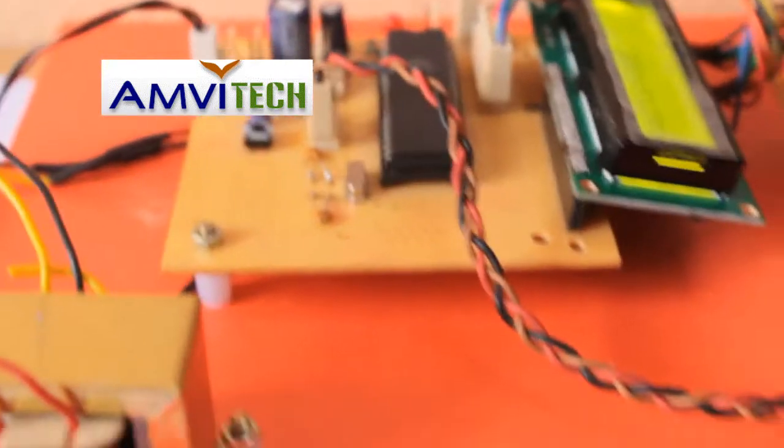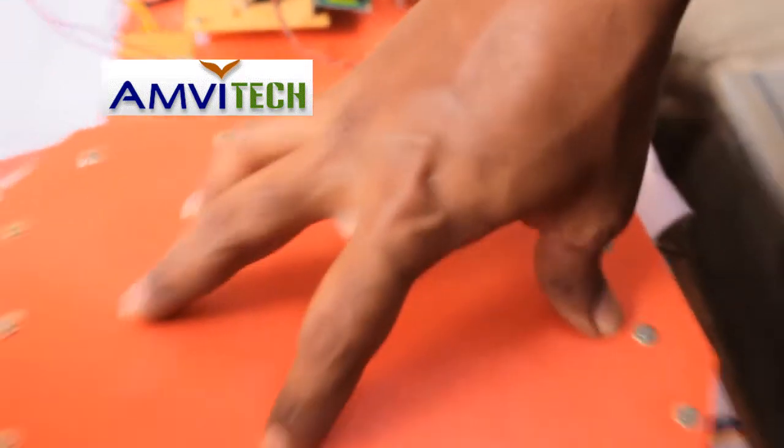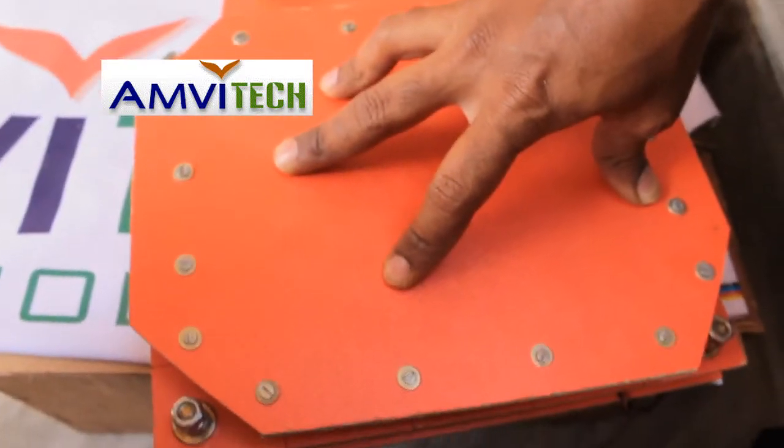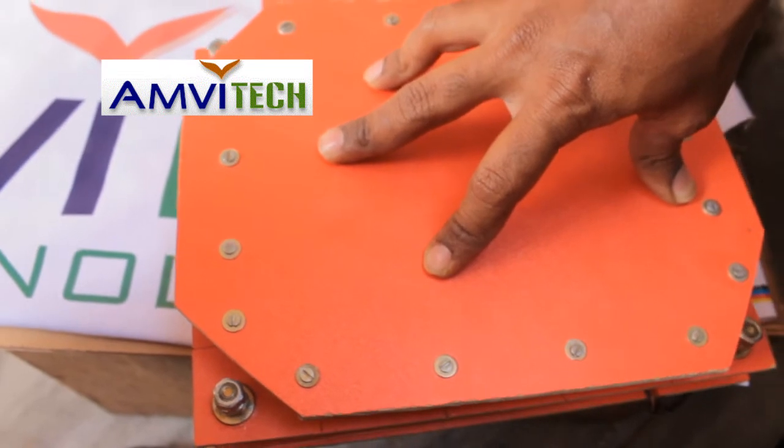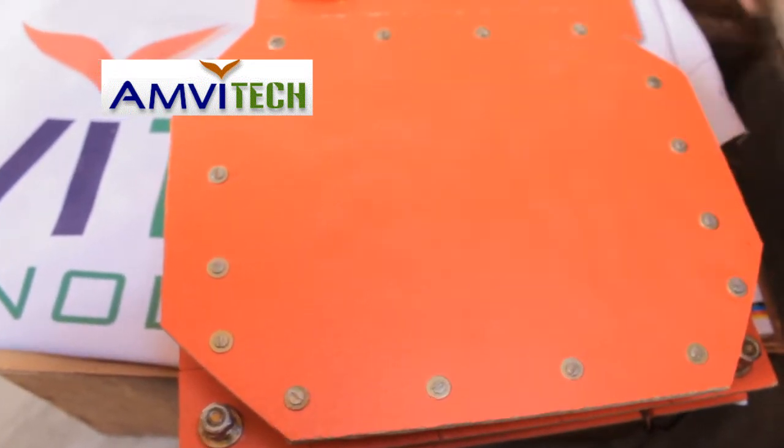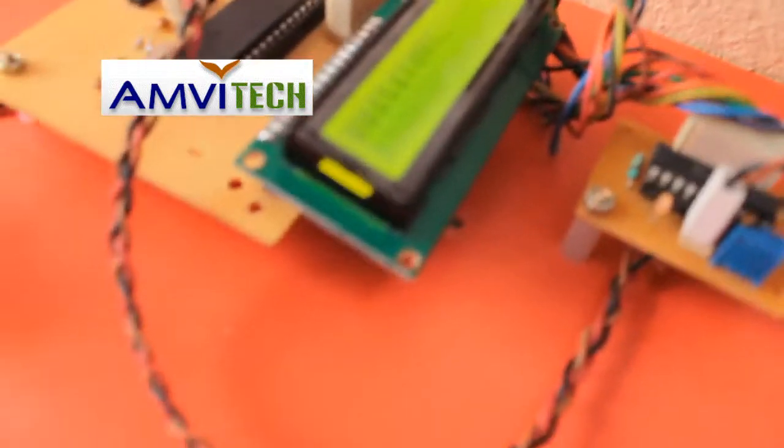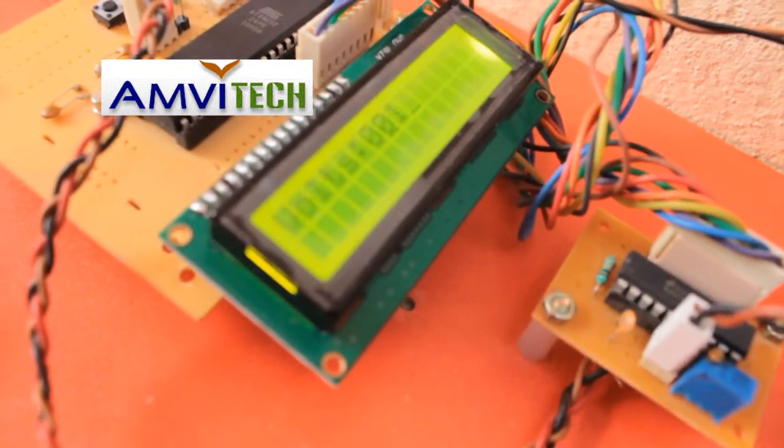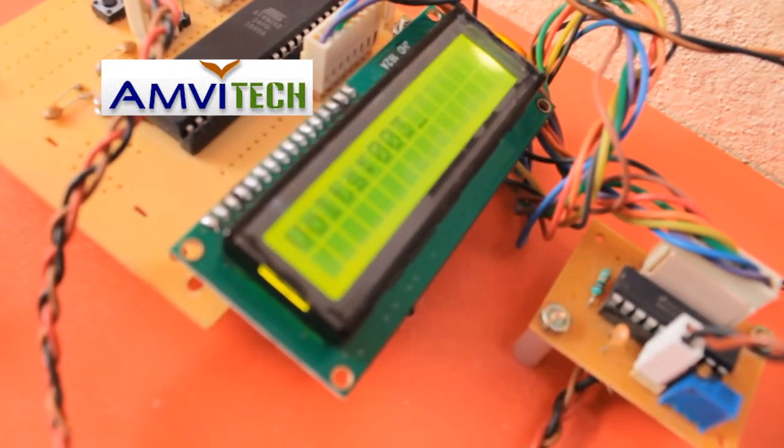When we apply pressure on this particular footstep generator module, a proportional value of electricity is generated and that particular value will be displayed on the LCD. So let me show the operation.